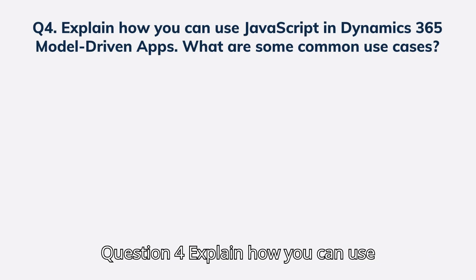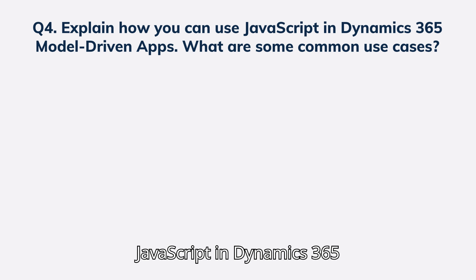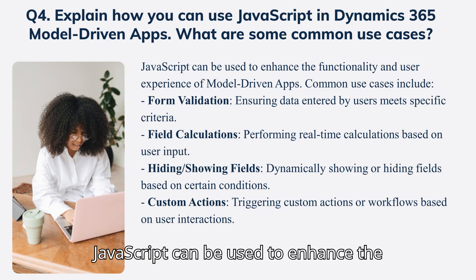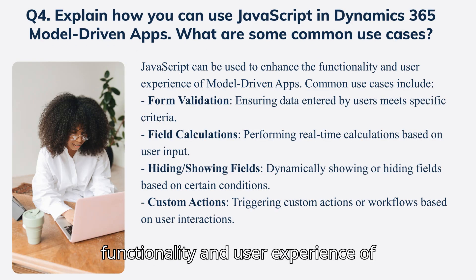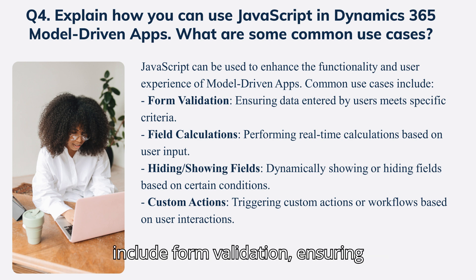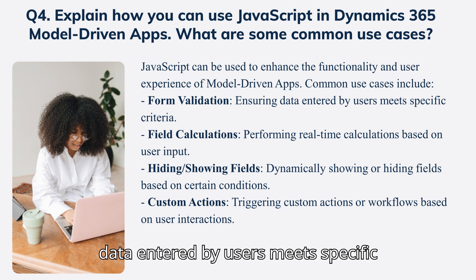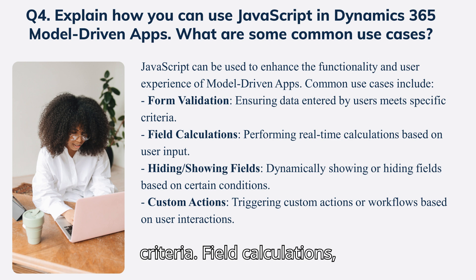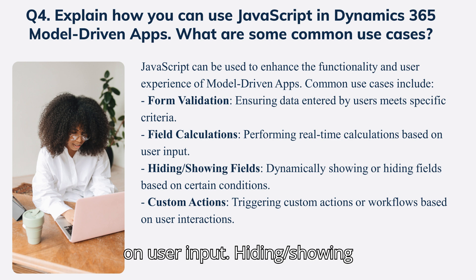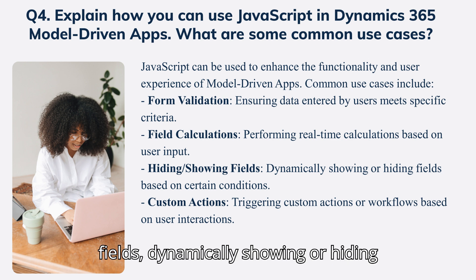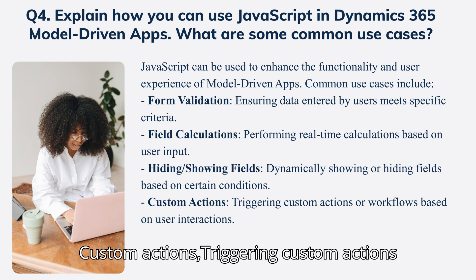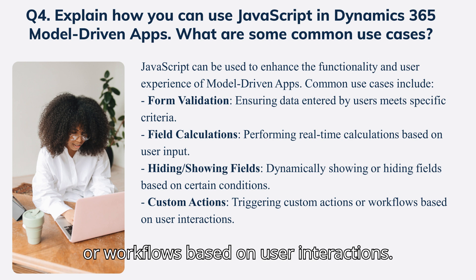Question 4: Explain how you can use JavaScript in Dynamics 365 model-driven apps. What are some common use cases? JavaScript can be used to enhance the functionality and user experience of model-driven apps. Common use cases include: form validation — ensuring data entered by users meets specific criteria; field calculations — performing real-time calculations based on user input; hiding or showing fields dynamically based on certain conditions; and custom actions — triggering custom actions or workflows based on user interactions.